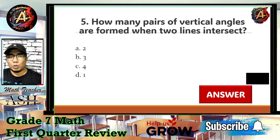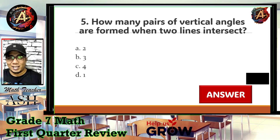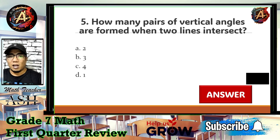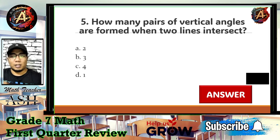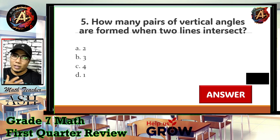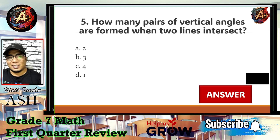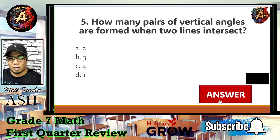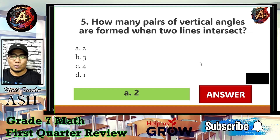When two lines intersect, four angles are formed. Talking about pairs — north and south, east and west — we have two pairs of vertical angles. That is letter A. Let's check whether we are correct. Now let us go to question number six.